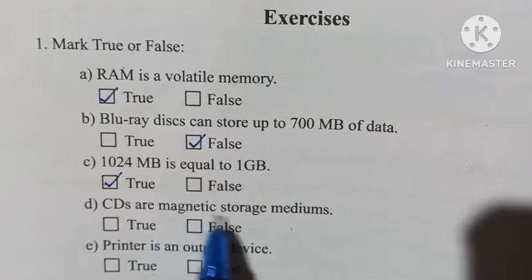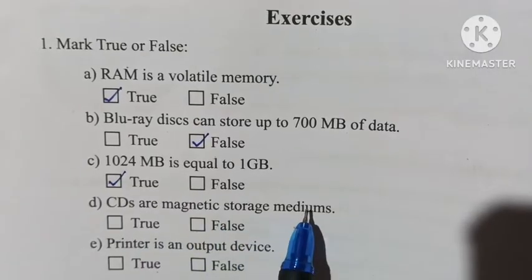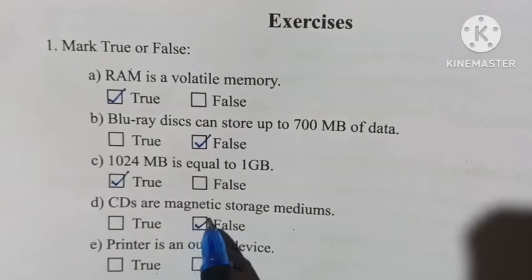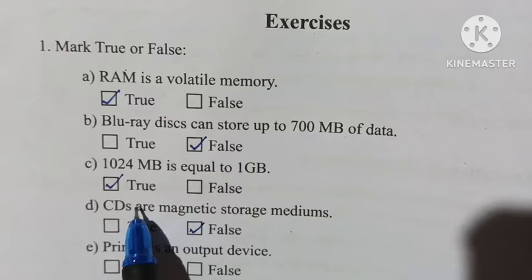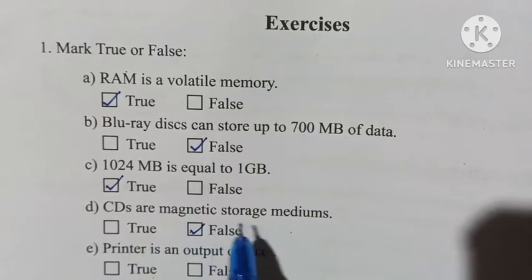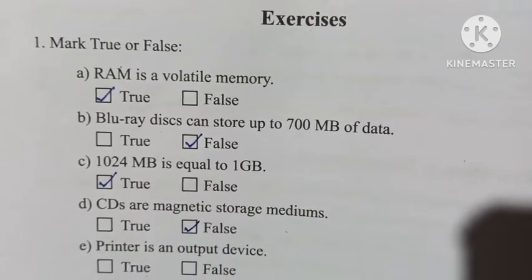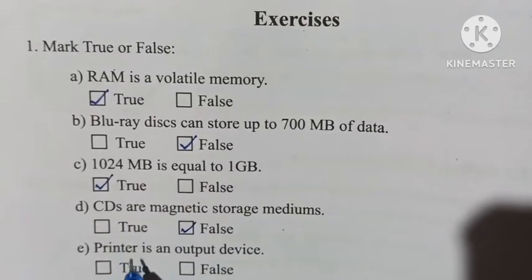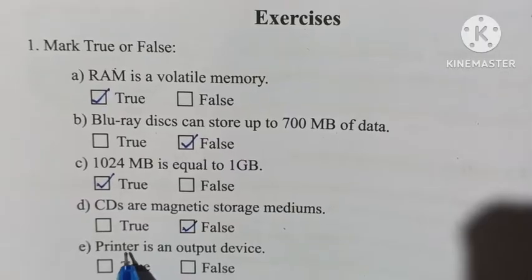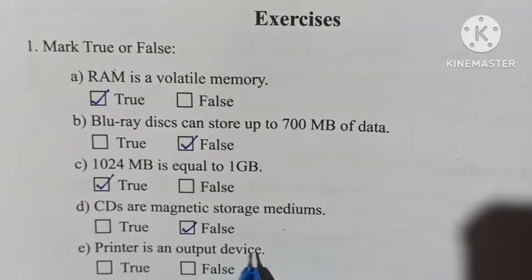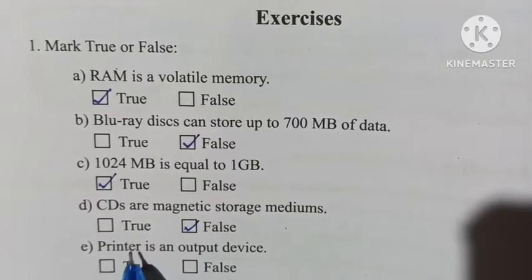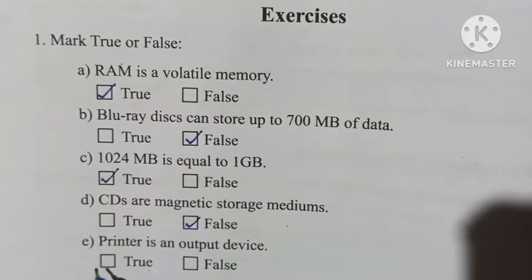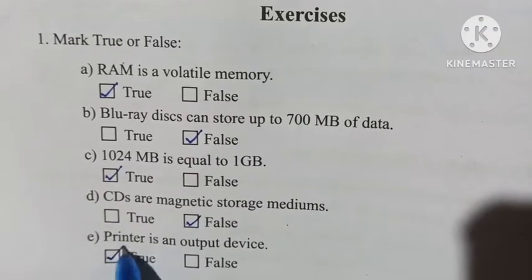CDs are magnetic storage mediums — this is false, because CDs are optical storage mediums. And our last true or false: printer is an output device. We know that a printer is an output device, so it is true.